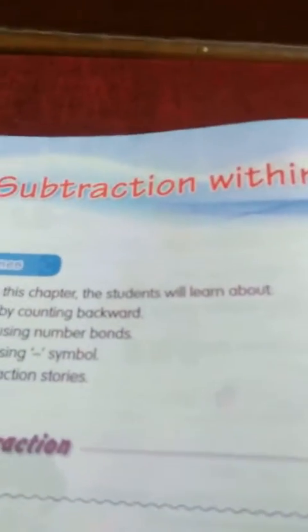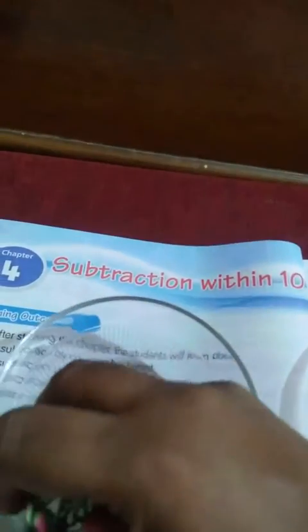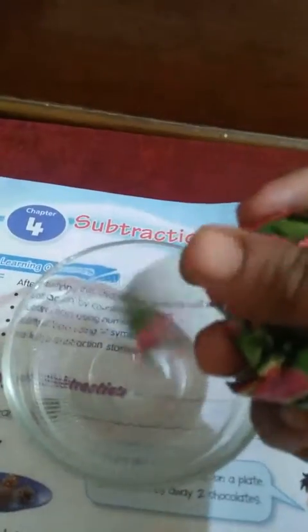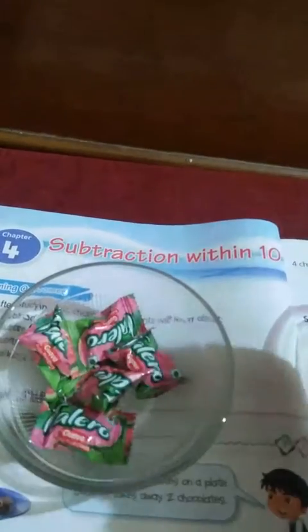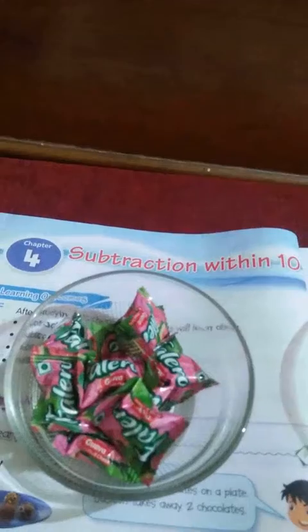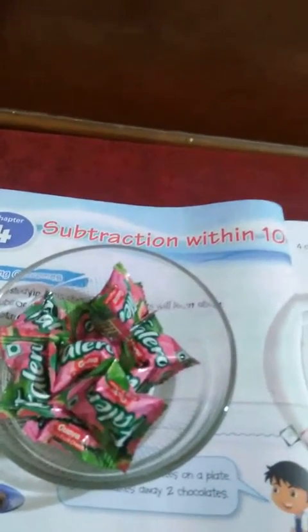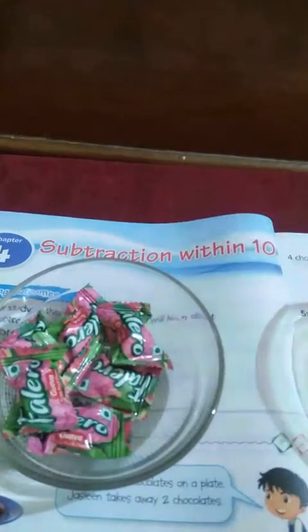For example, see here children, yeh ball mein kitna chocolates hai? One, two, three, four, five, six, seven, eight, nine. Kitna chocolates hai? Nine. Aapne tine chocolates aapke bahen ko de diya.